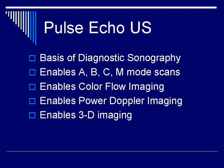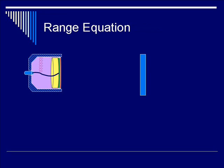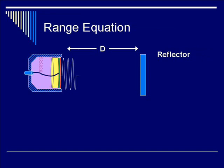When we talk about the range equation, we want to talk about time of travel for ultrasound pulses. Here you have a cartoon of the ultrasound transducer on the left side. On the right-hand side, at a certain distance D, is the reflector, which the ultrasound echoes are determined to detect. The distance D separates the transducer surface from the reflector.